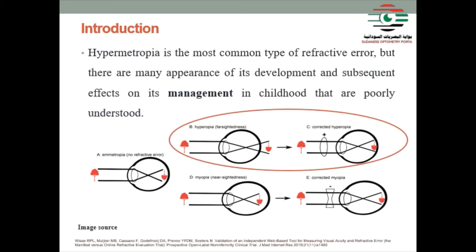Hyperopia is a condition of the eye in which parallel rays are focused behind the retina. In the management we need to put this image on the retina. Hyperopia is a common type of refractive error, but there are many aspects of its development and subsequent impact on its management in childhood that were poorly understood due to the lack of a convenient strategy for the management of hypermetropia.